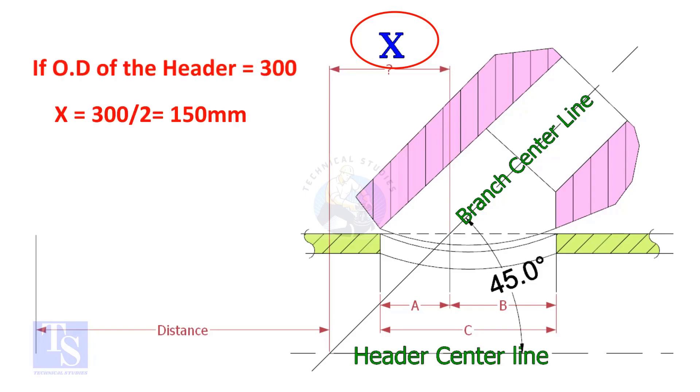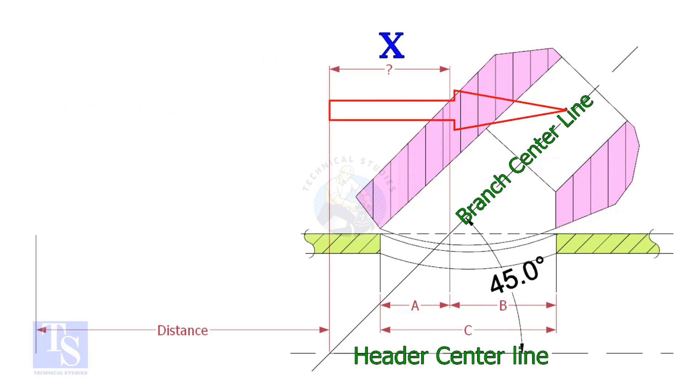Suppose the OD of the header is 400 mm, then the value of X will be 200 mm. Mark the half OD on the direction of the lateralette. Mistakes happen when marking the direction of the lateralette.